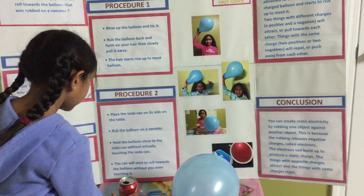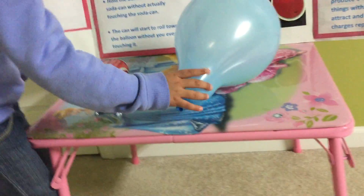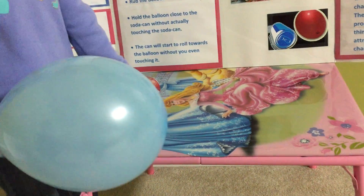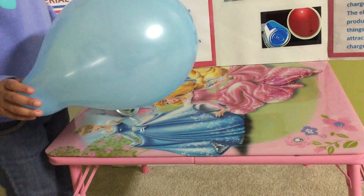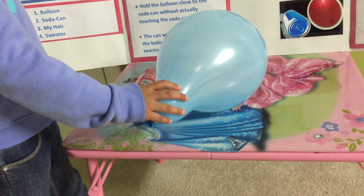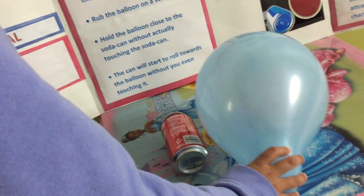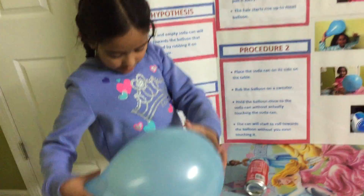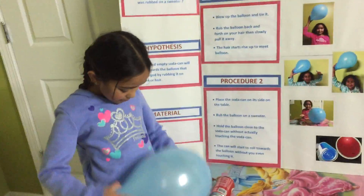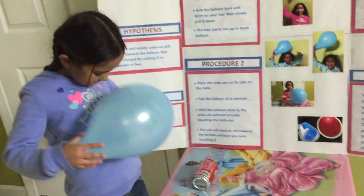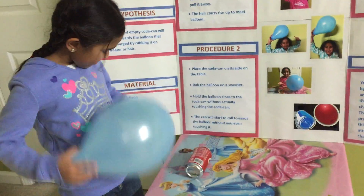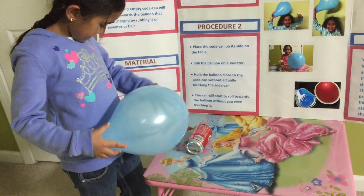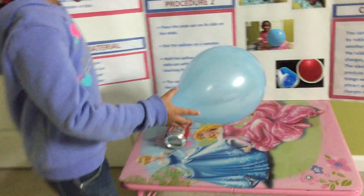Now, my procedure number two is I'm going to put this on the table, one inch away from the balloon. You see, nothing's happening. Now I'm going to rub this balloon on a sweater. Now I'm going to put it close to the can. You see, it's rolling!